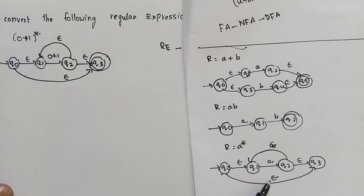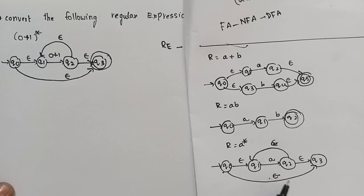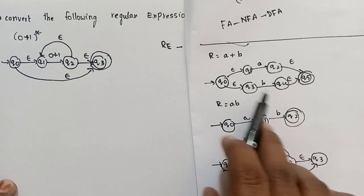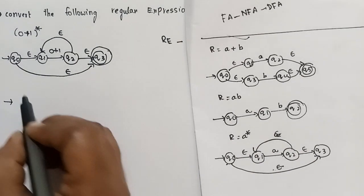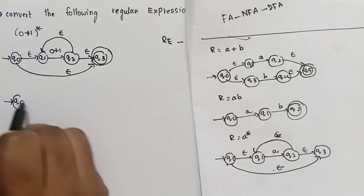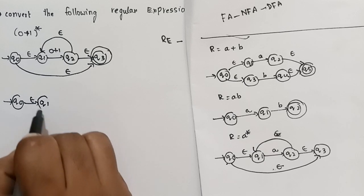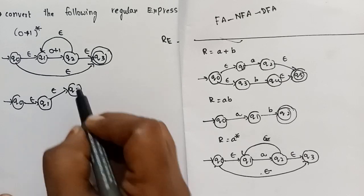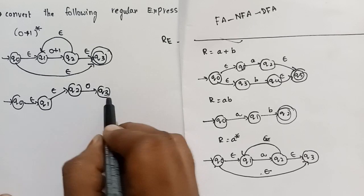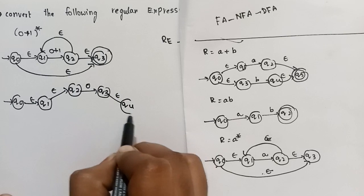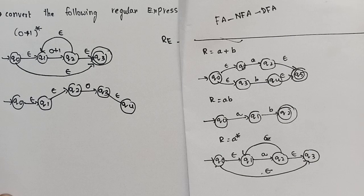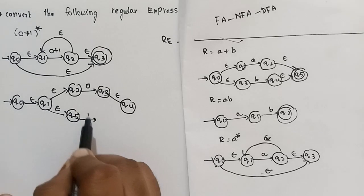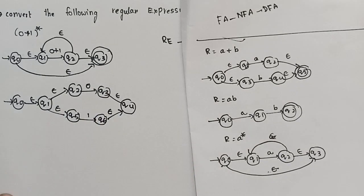If you want to use the star formula, we can apply and expand it. You need to substitute the star formula. Here, A place is 0, B place is 1. X to Q0 on epsilon goes to Q1, Q1 on epsilon goes to Q2, Q3 on epsilon goes to Q4. Here A place is 0 plus 1. Q1 on epsilon goes to Q5, Q5 on epsilon goes to Q6, Q6 on epsilon goes to Q4.